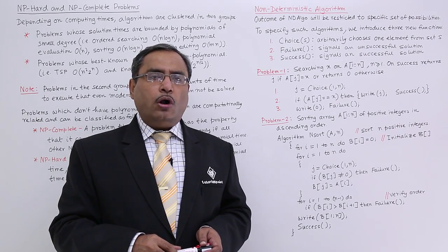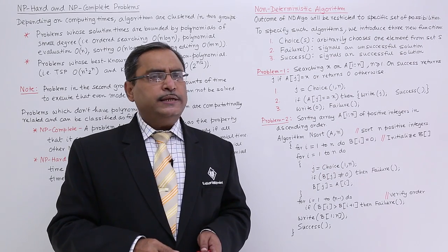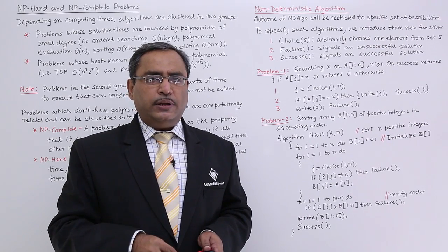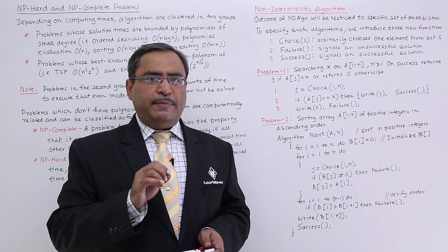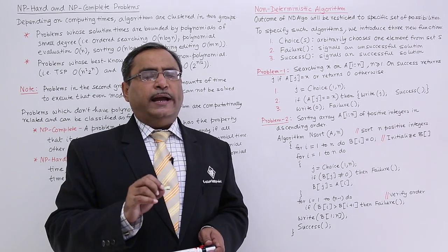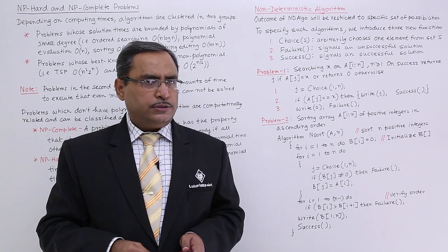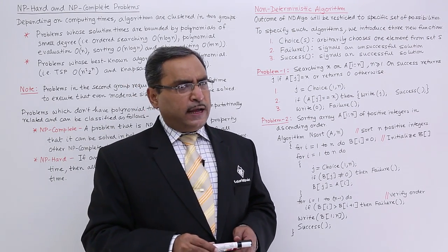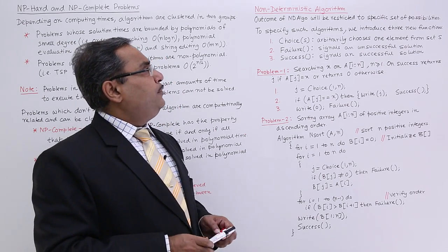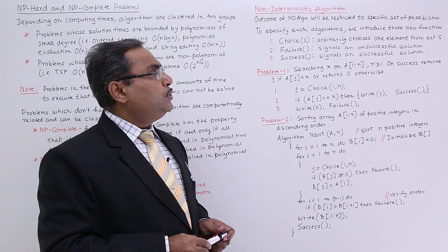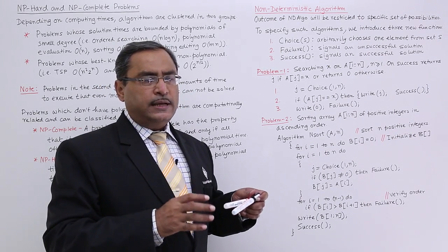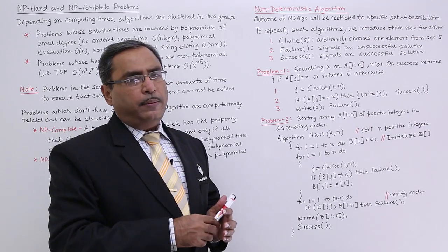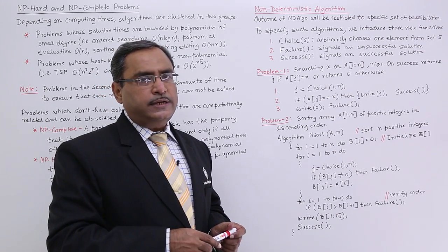In this session, we are discussing non-deterministic algorithms. In our deterministic algorithm, the outcome of the algorithm is fixed. For example, in a searching algorithm, the outcome will be true or false — true if the item exists, false if it does not. If we waive this restriction, the outcome of a non-deterministic algorithm will be restricted to a specific set of possibilities, meaning one output will come from a set of possible outputs.